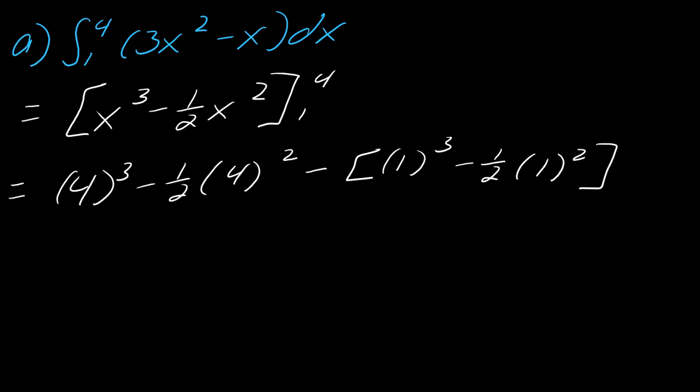And okay, so now from here on out, basically it's just a matter of going through and evaluating all this. So this is 64 minus 8 minus 1 plus one half. And so if I just want to state that as a decimal, this comes up to 55.5. And so that's really it.